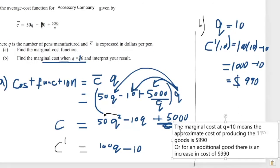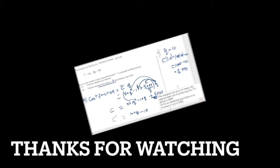Now what does this mean? The marginal cost at Q equals 10, meaning the marginal cost when we have 10 pens being manufactured, means the approximate cost of producing the 11th good is 990 dollars. Or we can say for an additional pen manufactured, there is an increase in cost of 990 dollars. And that's it.